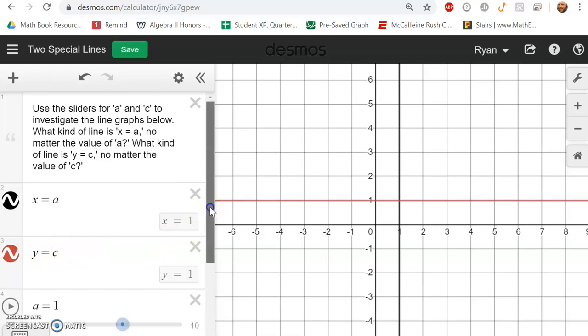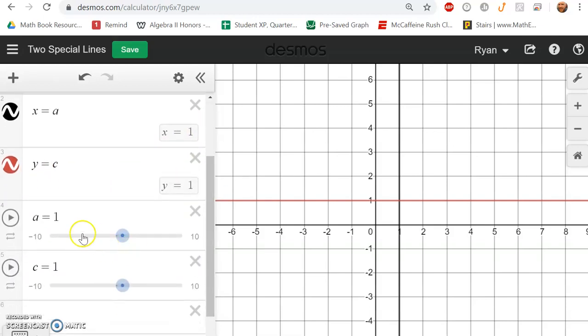Now to examine that or to investigate that, you have sliders where you can change the values of a and c. You can change them by clicking and holding and then dragging to increase or decrease the value of a.